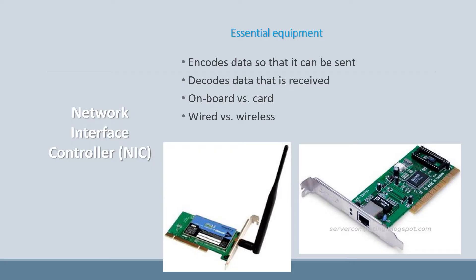Now we're going to talk about the equipment you need to create a network and to connect to the internet. A NIC, or network interface controller, is something you actually have in your computer. You may not know it's there, and it may not look like the cards shown here — it could be built in. If you're using a laptop, it would be built in. On a cell phone it's not called a NIC, but there is technology built in that allows you to connect to the internet or to a network.